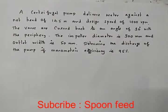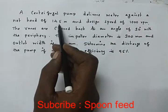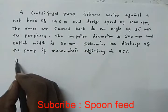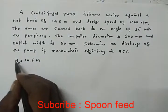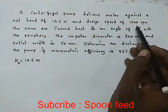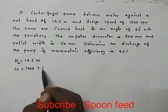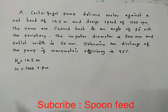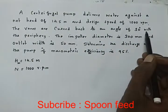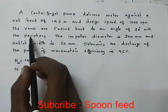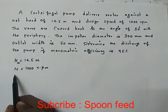A centrifugal pump delivers water against a net head of 14.5 meters at a design speed of 1000 rpm. The vanes are curved back to an angle of 30 degrees with the periphery. So at the outlet, the van angle pi value is 30 degrees.